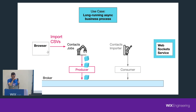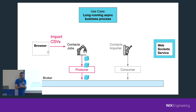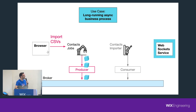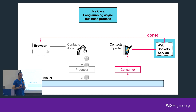You can see here that not only is it a long business process, it also spans multiple different microservices. So you can have a cascading gRPC and REST request, but it will be less resilient and less error safe. Once the message is produced to Kafka, the contacts importer that actually processes these jobs can consume the messages at its own pace and do the long processing that is required. Maybe there's another service there.